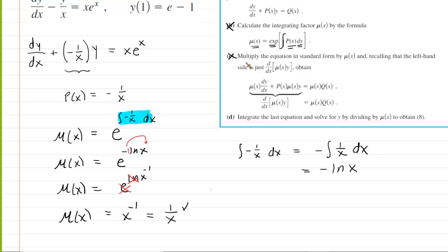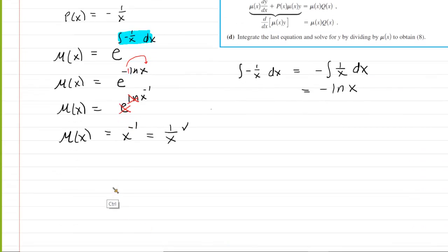We can move on to the third step. We need to multiply the differential equation in standard form by mu of x. We're going to take our standard form differential equation, and we are going to multiply both sides of it by 1 over x in this case. There we have it.